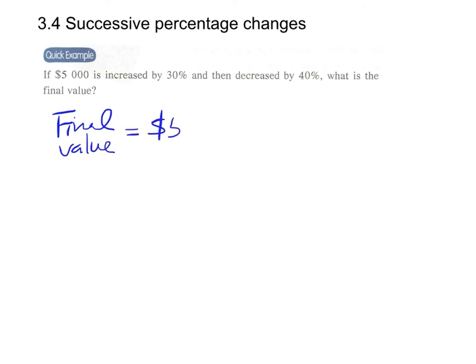Since there is no new formula, we apply the same principle: $5,000 multiplied by (1 + 30%), this is the increase, and then decreased by 40%, we multiply by (1 - 40%). After using our calculator, the answer is $3,900.